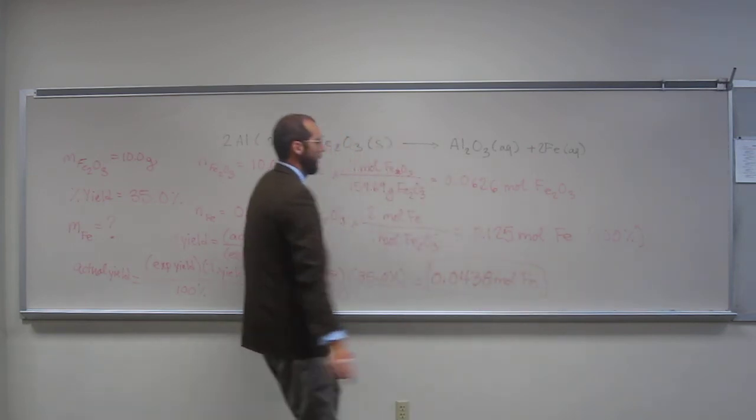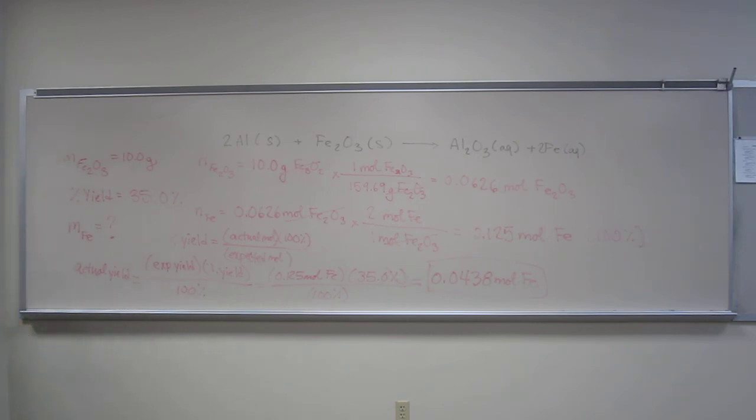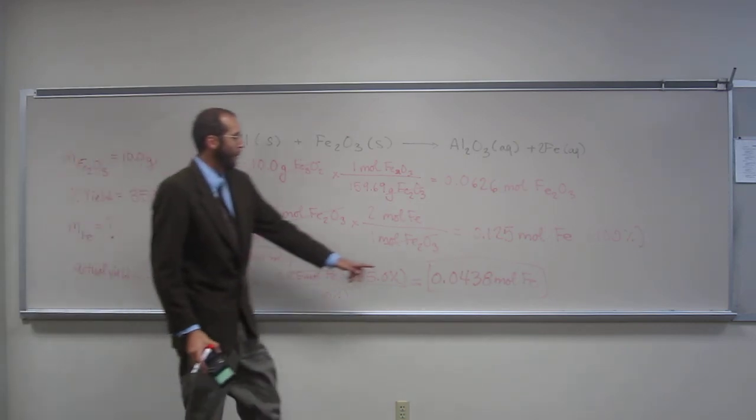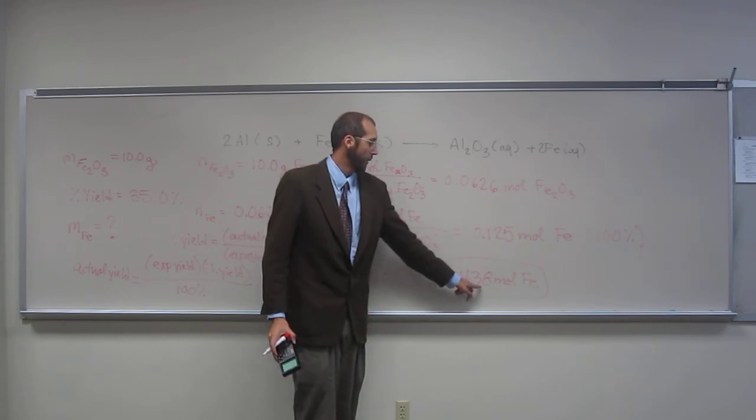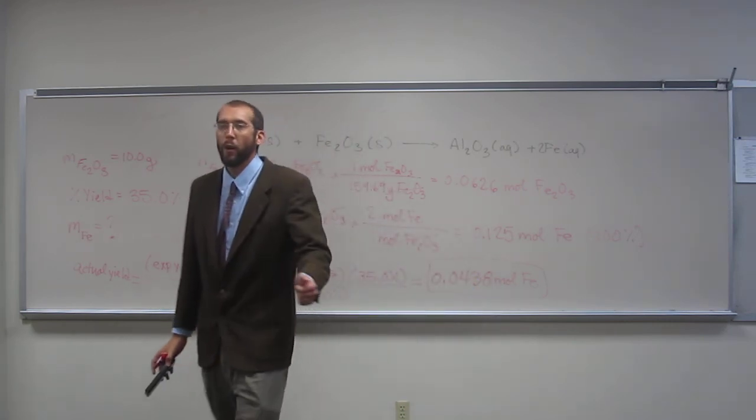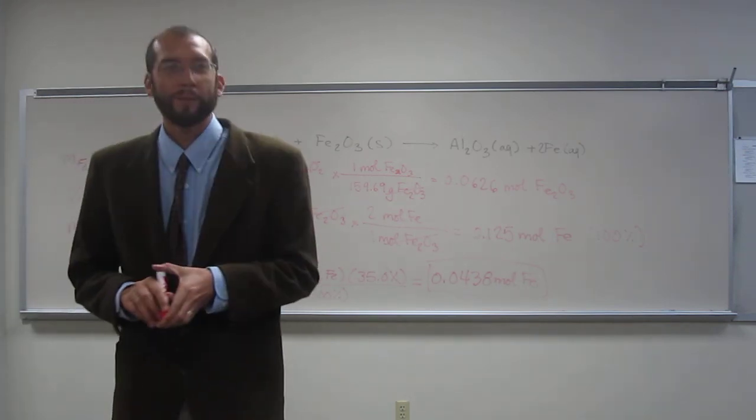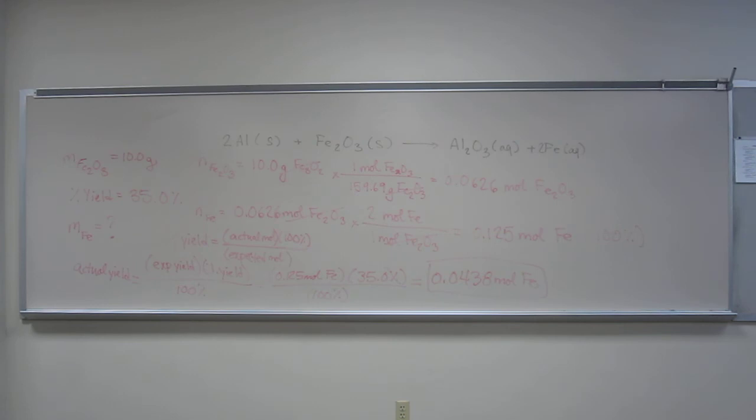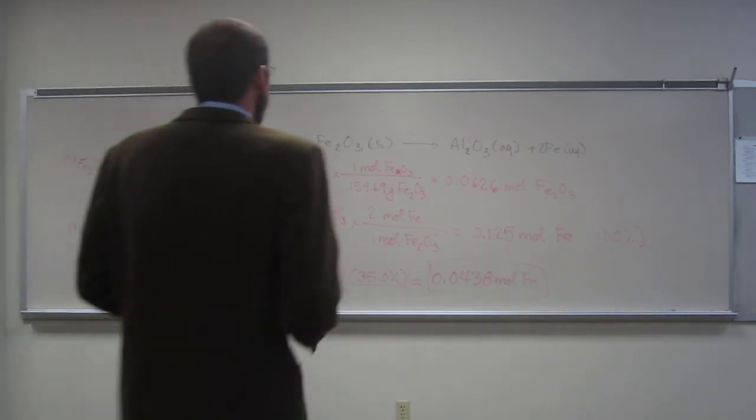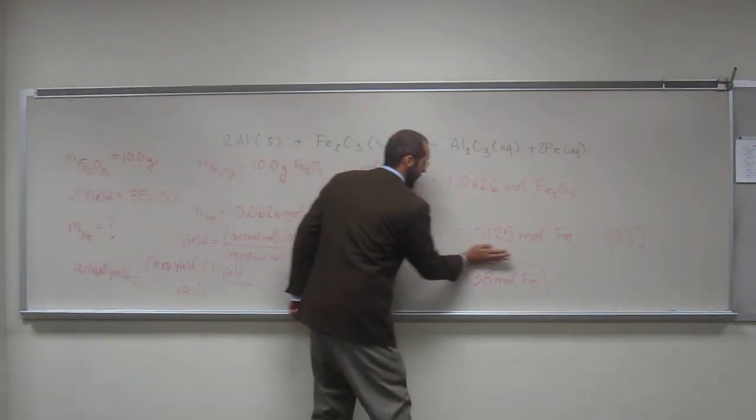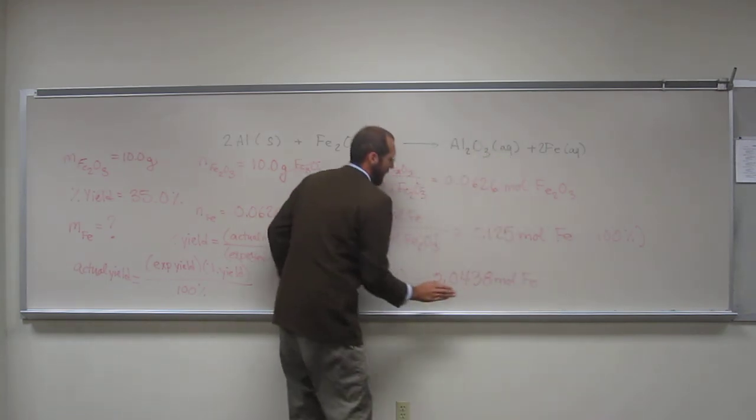So, what is this telling me? If I had a 35% yield of this reaction, I would make 0.0438 moles of iron from 10 grams of iron oxide. Is everybody okay with that analysis of it? Any questions on this one? Okay. So, good job, guys. Do you want to put it in grams? If you want to, do you want to put it in grams? Let's put it in grams. That's a good idea. Sorry. That's okay. No. Let's put it in grams.